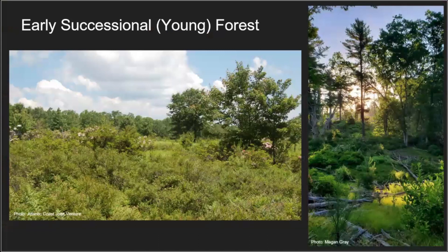One of these managed habitat types is early successional or young forest. Early successional forest is characterized by extensive shrubby growth and establishing sapling trees. As you can see in the two pictures, there are two different variations of this — it can be incredibly open with no canopy, or it's the undergrowth under an open canopy. It really needs a lot of light access for this growth to regenerate.